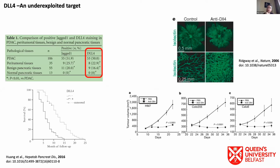DLL4 is what we class as an underexploited target. As we're all aware, there's a need for novel treatments across a range of different cancers. One of the potential avenues of doing this is by targeting DLL4. This is a Notch ligand necessary for the production of the tumour branch vasculature, which tumors then utilize as part of their angiogenic strategy.